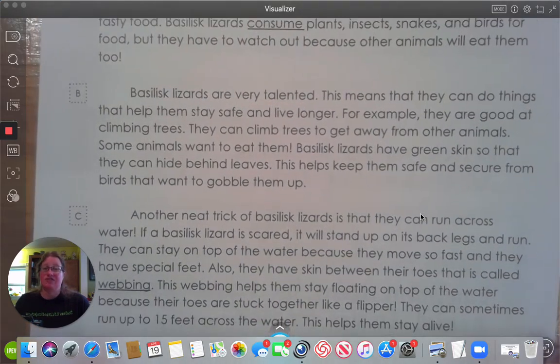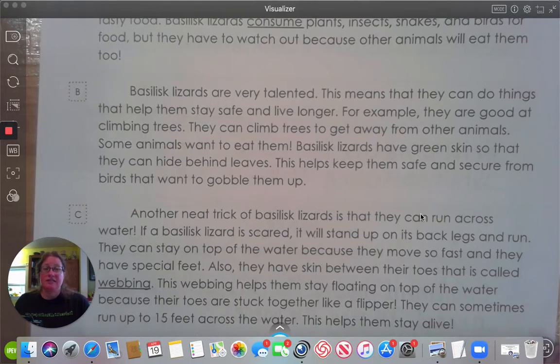Basilisk lizards are very talented. This means that they can do things that help them stay safe and live longer. For example, they are good at climbing trees. They can climb trees to get away from other animals. Some animals want to eat them. Basilisk lizards have green skin so that they can hide behind leaves. This helps keep them safe and secure from birds that want to gobble them up.